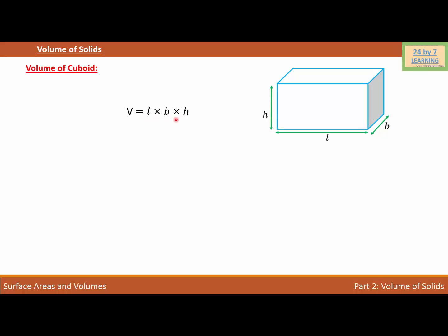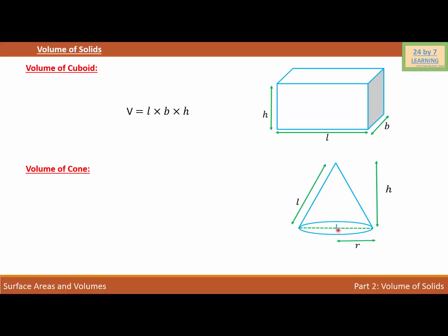Volume of cone. Let's draw a cone. So this is my cone. As you can see, the radius of the cone is r, the height of the cone is h, and the slant height is l. Then the volume of a cone is given as V = (1/3)πr²h.